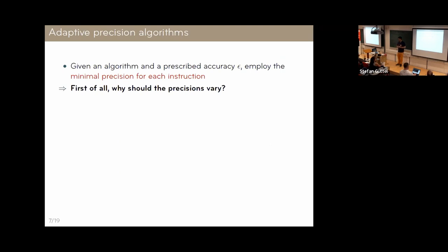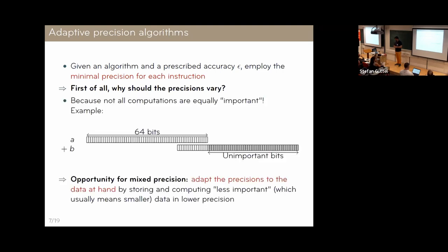Let me define what adaptive precision means. The idea is that we have an algorithm and a prescribed target epsilon, and we ask: what is the minimal precision needed for each instruction? The first question is: why would precisions vary from one instruction to another? Why not just set the precision to epsilon or the closest available precision and be done with it? The reason is that not all computations inside the algorithm are equally important.